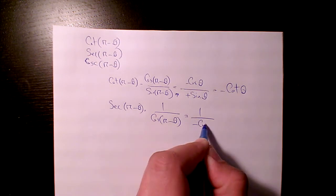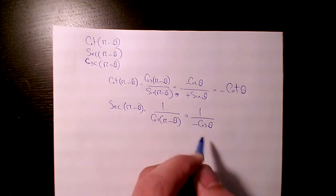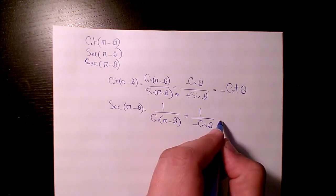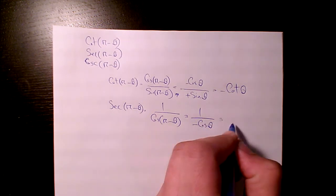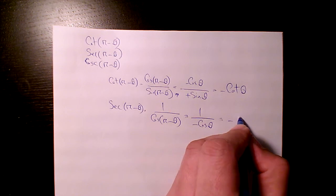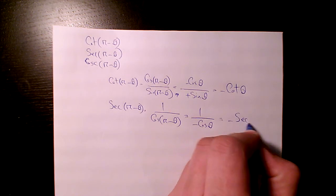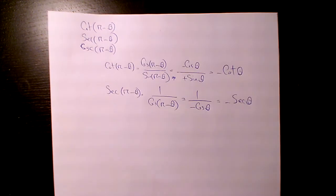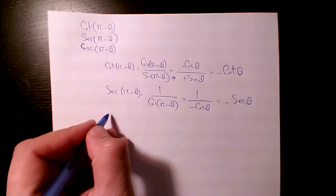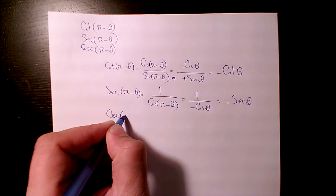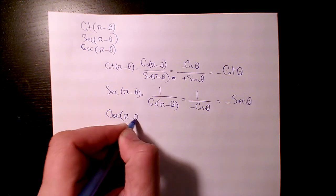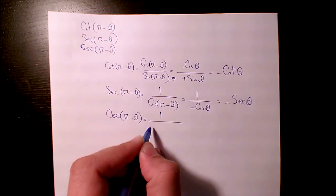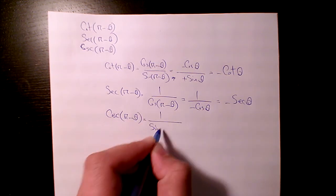The next one is sec(π - θ), which will be equal to the inverse of cos(π - θ), which will be equal to one over negative cos θ, so it will be equal to negative sec θ.